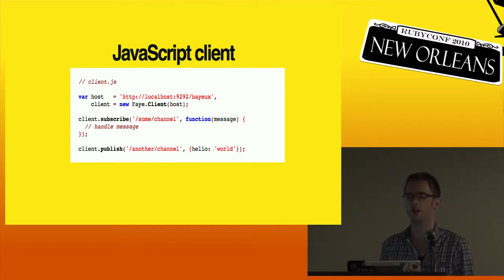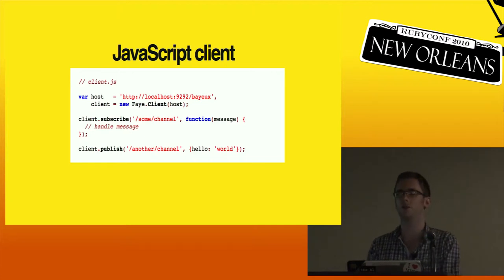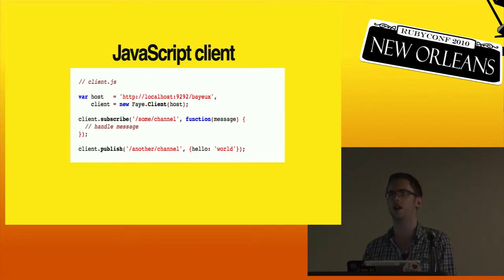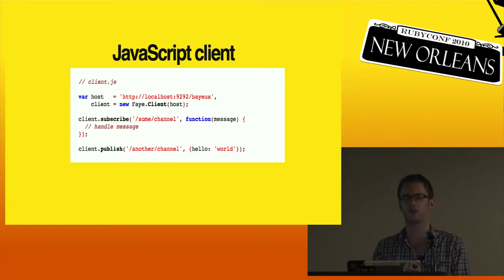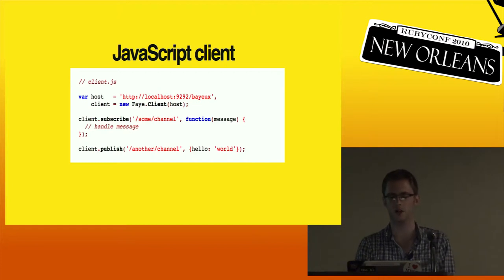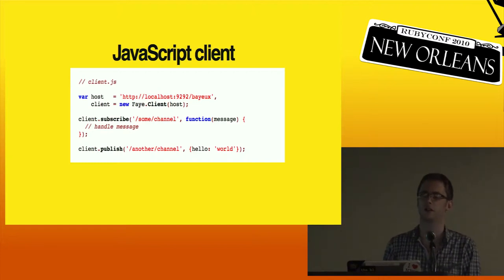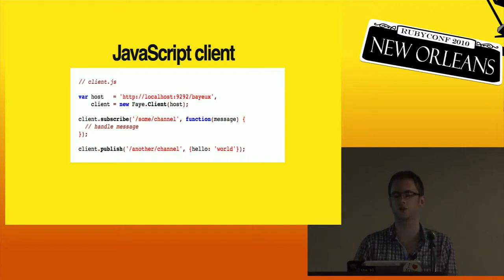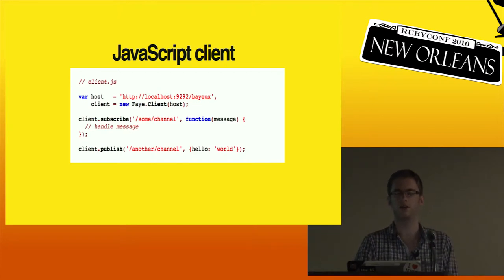You can then just tell it to subscribe to a channel and give it a callback function that will accept messages sent to that channel. The channel system works so that all channels look like path names. When you publish a message, you never send it directly to an individual client - you publish to a channel and the server figures out which clients are subscribed and sends the messages to them. The routing system also supports wildcards, so you can match anything below a certain path. When you publish stuff you can publish anything that can be serialized to JSON, and it will get deserialized on the other end.